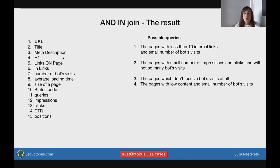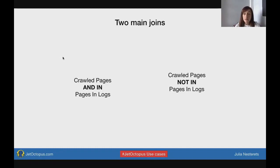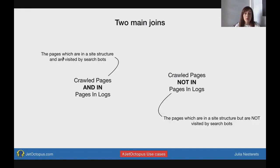There are two main join types: IN and NOT IN. For example, pages which are inside the site structure and are visited by search bots are pages which are in crawled pages AND in logs. On the other hand, pages which are in crawled pages but NOT in logs are pages inside the site structure that are not visited by search bots. So we get absolutely opposite results from this joining.